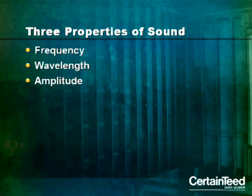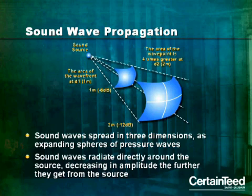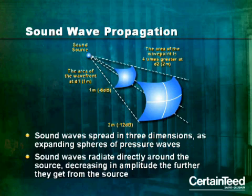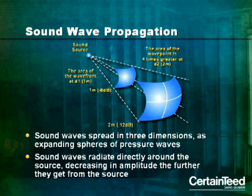Sound has three properties: frequency, wavelength, and amplitude. We'll look at all three. But first, here's how sound waves spread or propagate. Sound waves propagate in three dimensions as expanding spheres of pressure waves. Think of blowing a soap bubble, and then another inside of it, and then another, and so on, and they expand out infinitely through the air. These sound waves radiate directly around the source, and they decrease in amplitude, or loudness, as they get farther from the source.